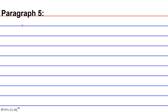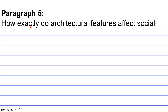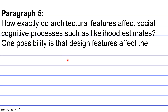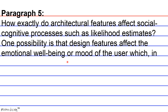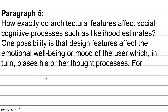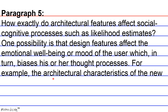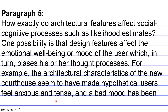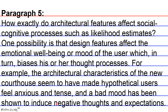Paragraph five: How exactly do architectural features affect social cognitive processes such as high likelihood estimates? One possibility is that design features affect the emotional well-being or mood of the user, which in turn biases his or her thought processes. For example, the architectural characteristics of the new courthouse seem to have made hypothetical users feel anxious and tense, and a bad mood has been shown to induce negative thoughts and expectations.